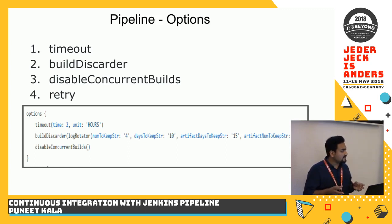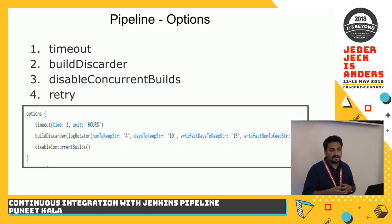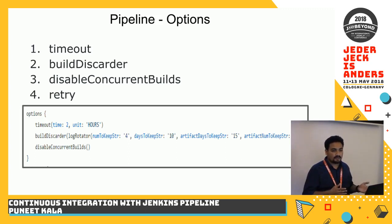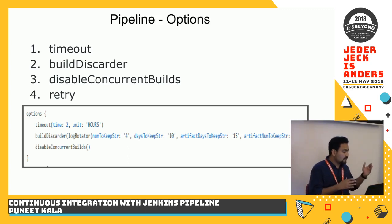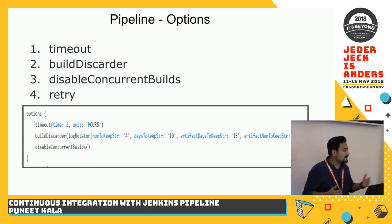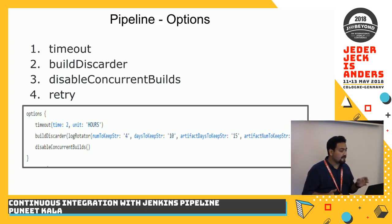There is an internal log manager in Jenkins pipeline, which is a good feature where you specify for how many days you want to keep build artifacts. If you have many pull requests coming in, the log size keeps increasing, so you need a way to discard and remove logs older than 4, 10, or 15 days from the system. That's done through build discard to keep your server clean.